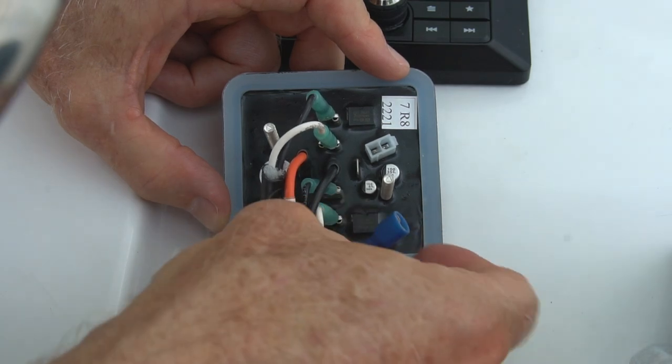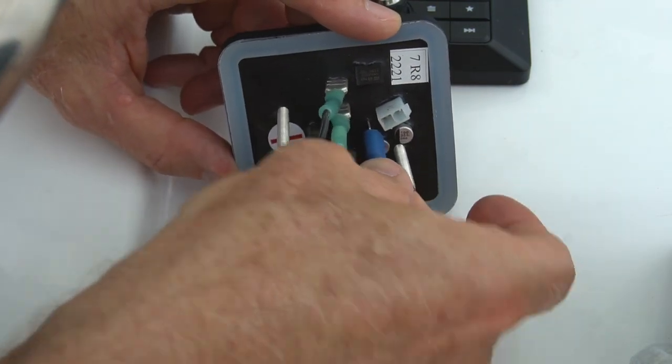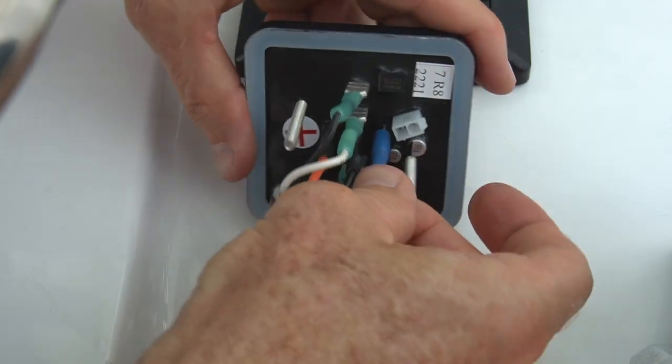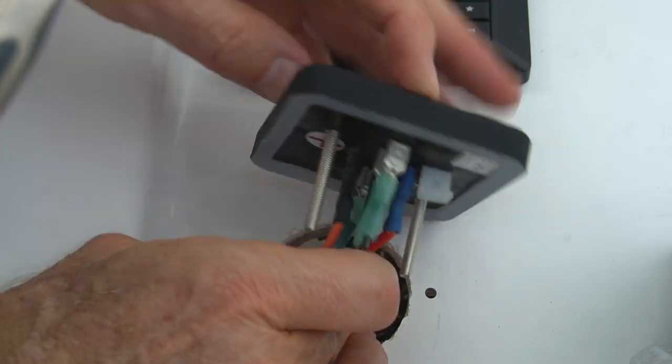Finally, the auxiliary from the key switch gets connected to the terminal on the right. Next, take the half-moon shaped backing plate and thumb screws to fasten the SLC control to the dash.